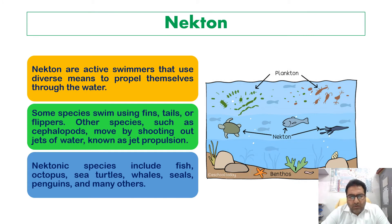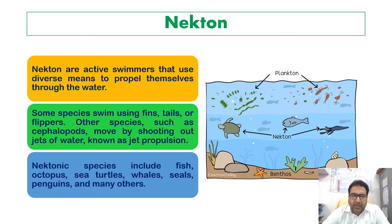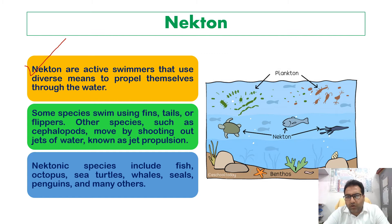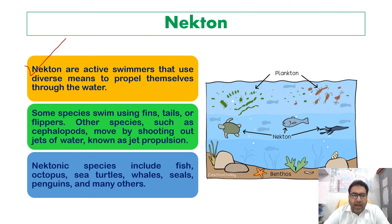Nektons are active swimmers that use diverse means to propel themselves through the water. They have the ability to move against the current of the water — they have the power of locomotion. Some species swim using fins, tails, or flippers.